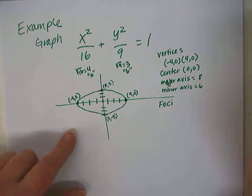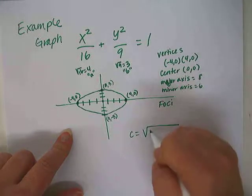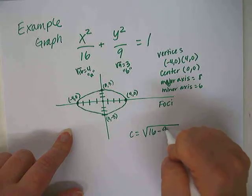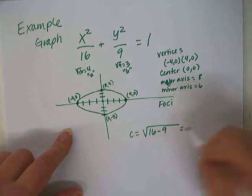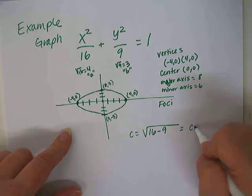Now let's do a tricky one. Let's find the foci. So remember we learned that to find the foci, c is the square root of a squared minus b squared. So 16 minus 9 is 7.